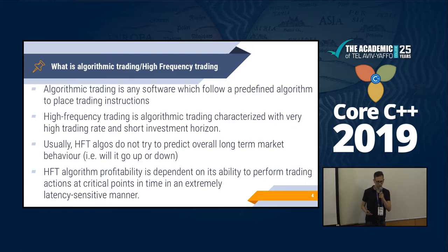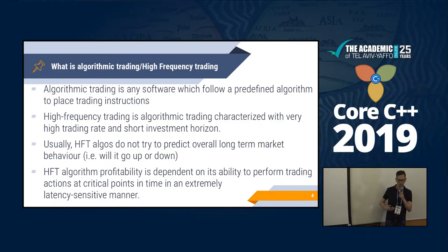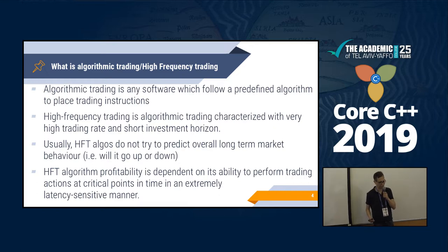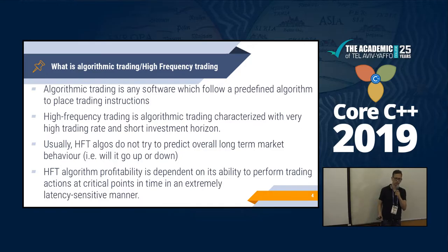Let's start with some definitions. Algo trading is every trading which is not done manually — done by some automated algorithm without manual intervention. High-frequency trading is more vague; basically it's any algo trading which has a high trading rate and a short investment horizon. A human trader would buy, sell, and hold for a day, a month, maybe years, whereas an HFT algo would typically buy and sell the same day, within hours, between minutes, sometimes within fractions of seconds.